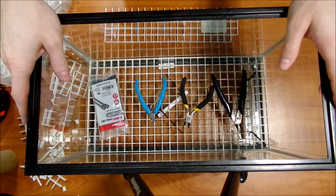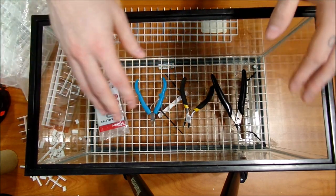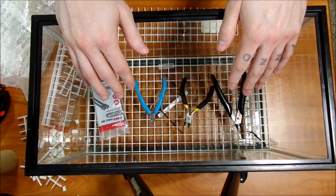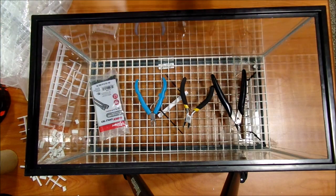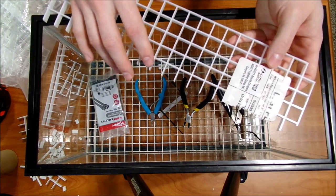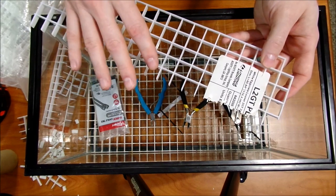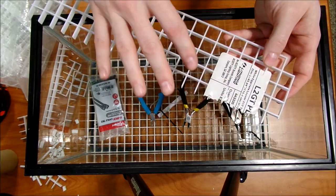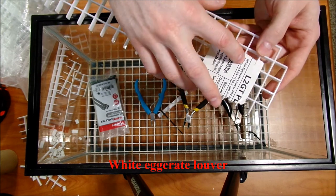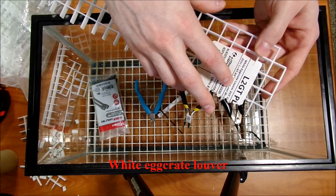You're going to need a sheet of egg crate. You can find it at Lowe's or Home Depot in the lighting section. Ask them for ceiling light panels and they'll take you to this section where this is. It's called wet white egg crate louver.